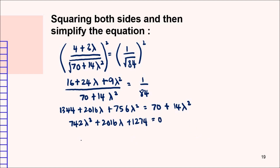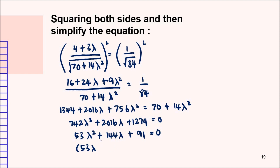Simplifying further, we get 53λ² + 144λ + 91 equals 0. Factorising this, we obtain (53λ + 91)(λ + 1) equals 0.